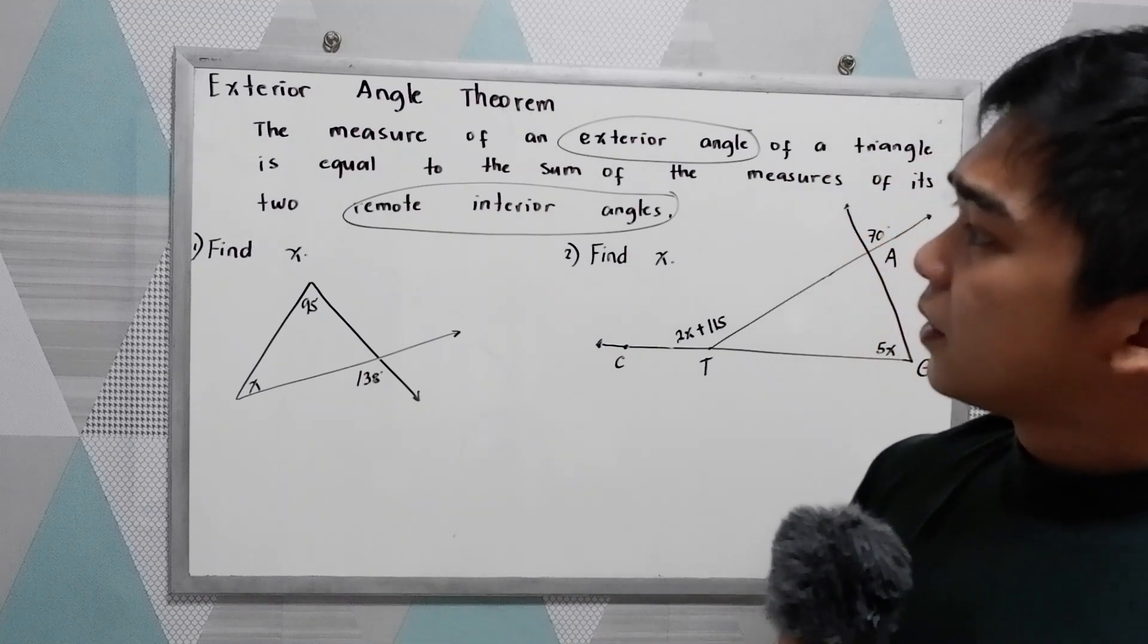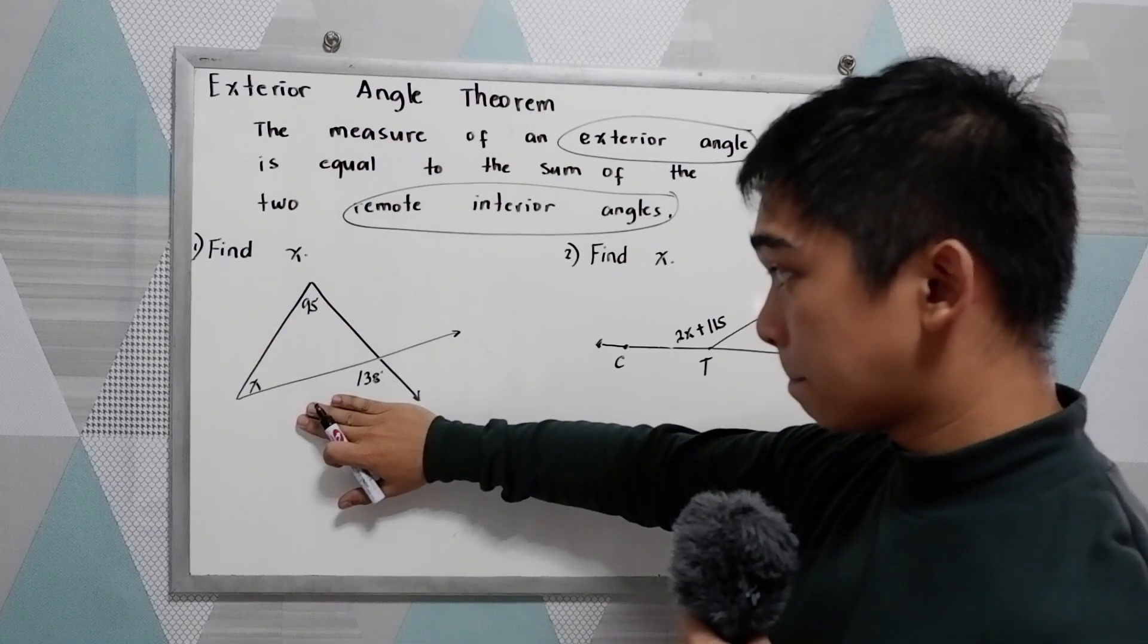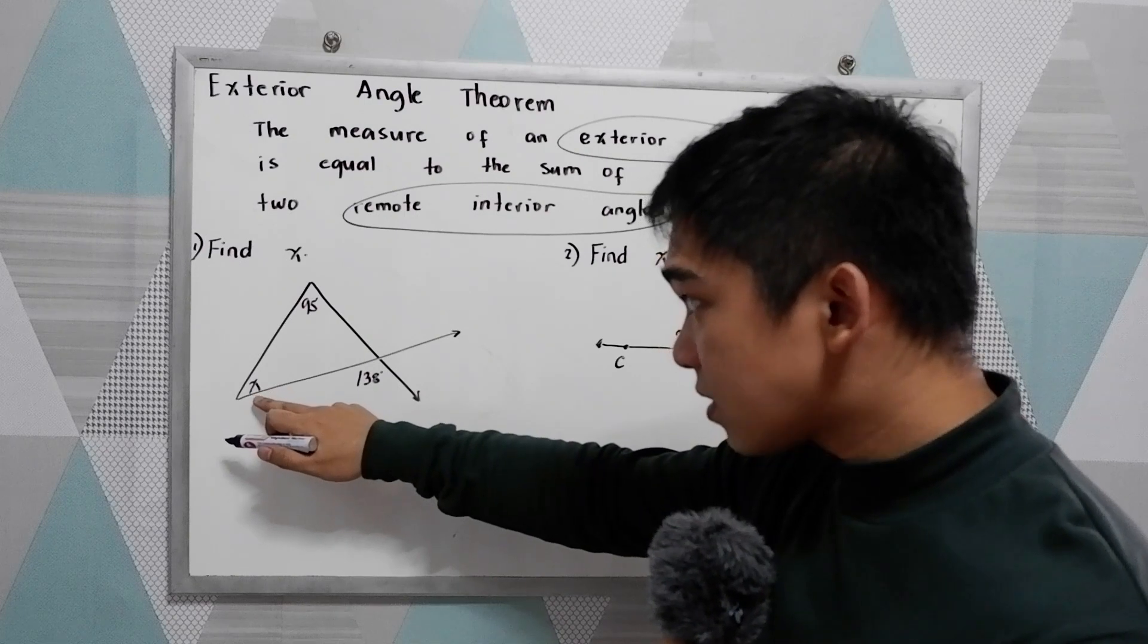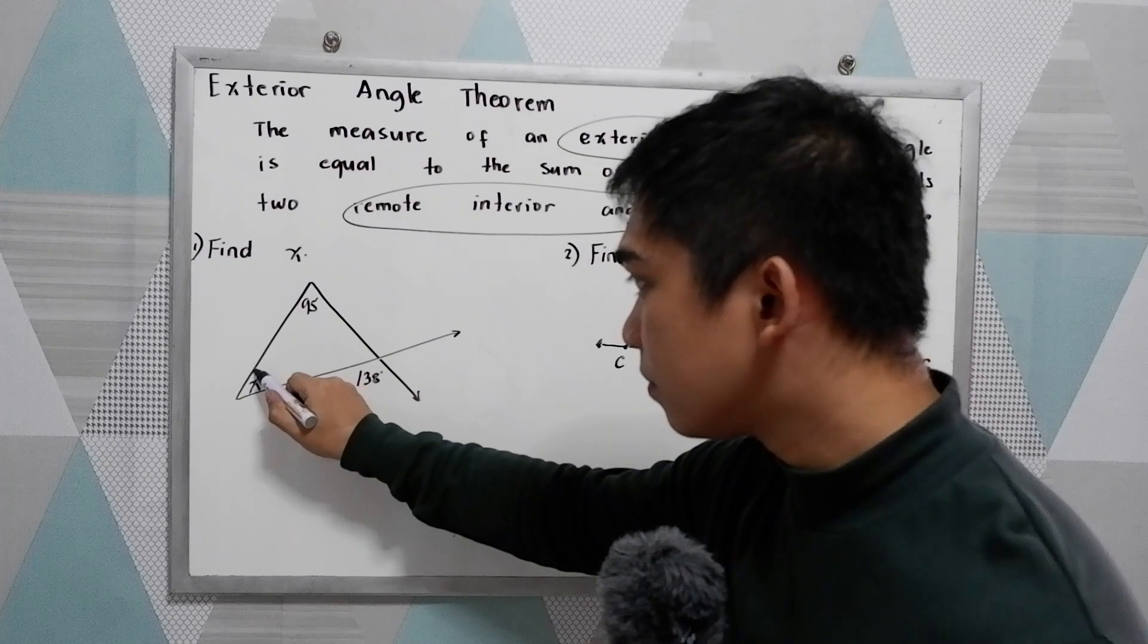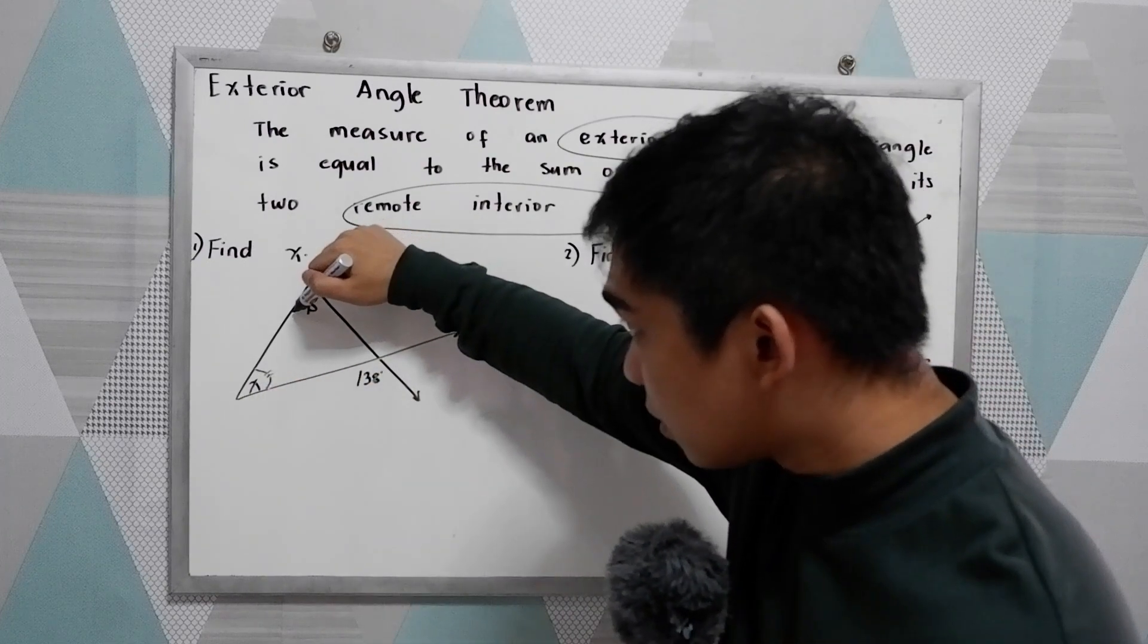So let's say number one, find X given this triangle. This is X, that is the unknown. We're going to get the value of that. Then we have 95, another given.